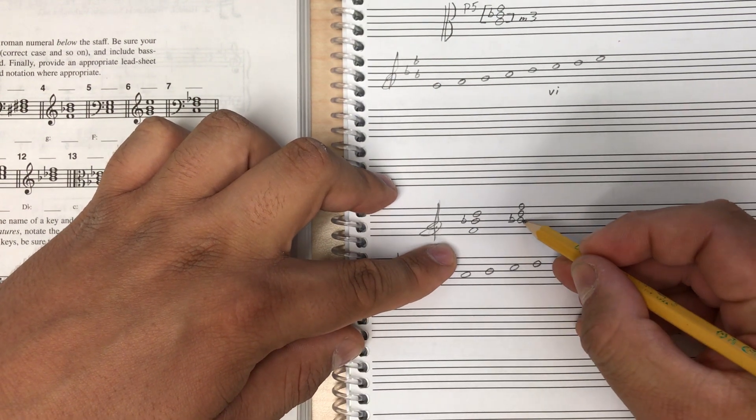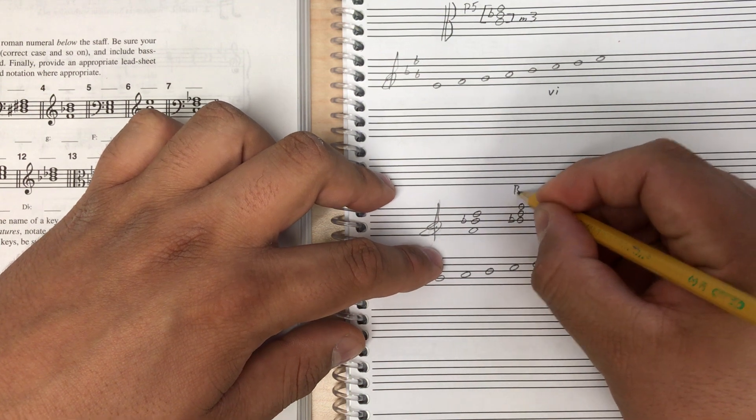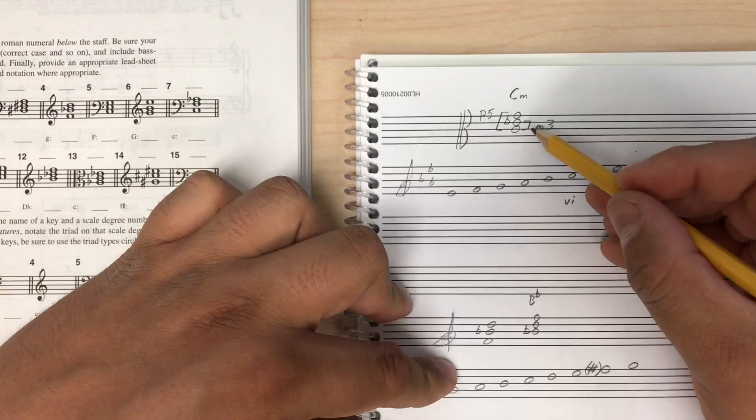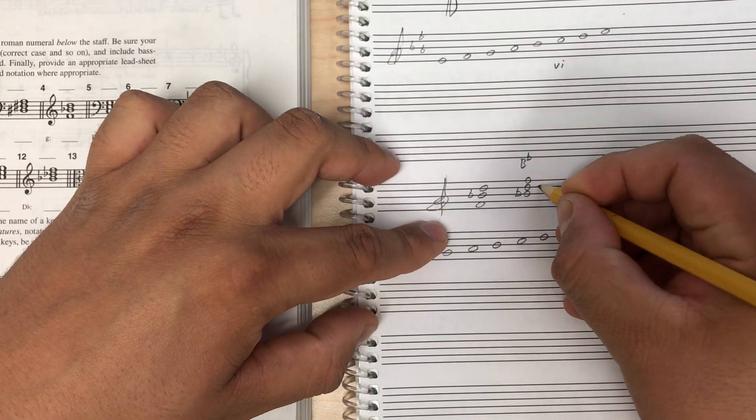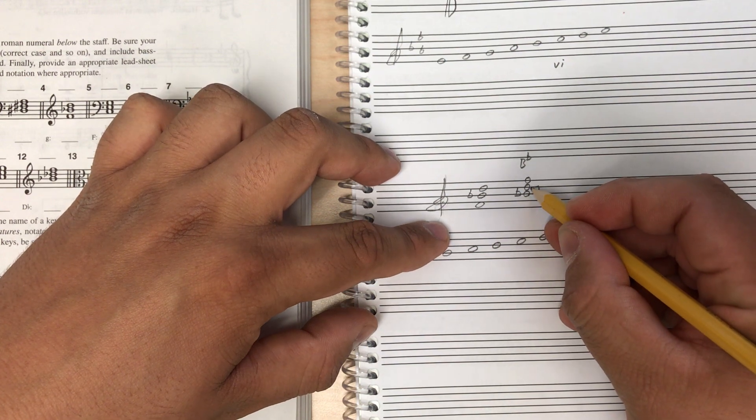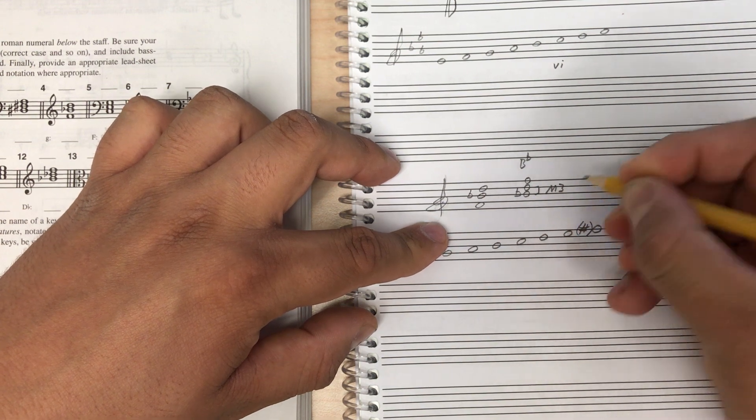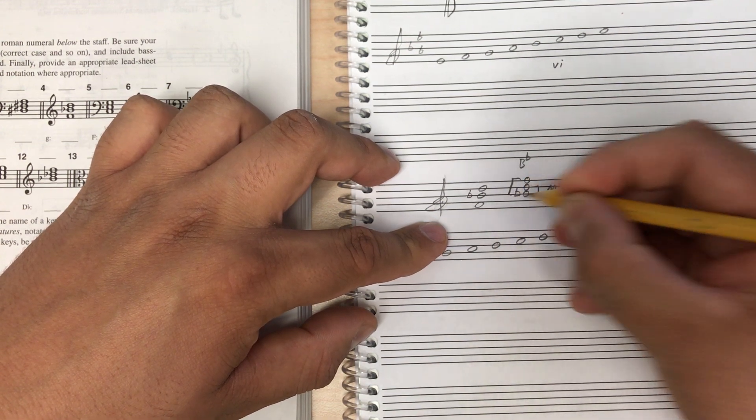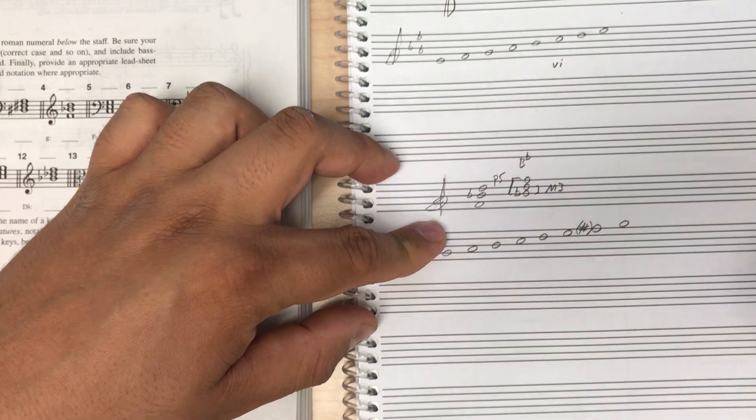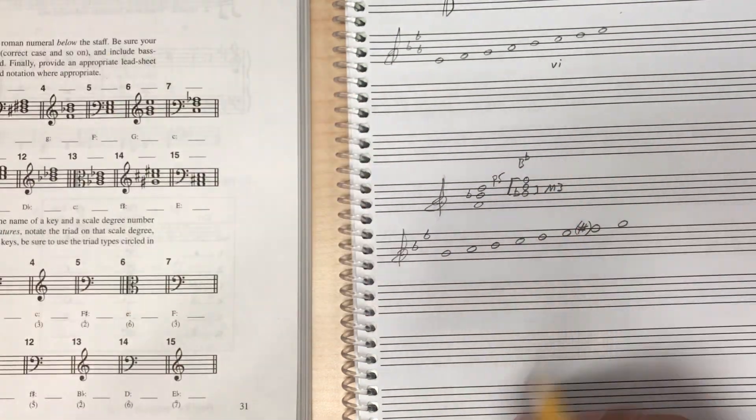So now that it's in root position, I can tell that this is a B flat chord of some kind, B flat. And then just like I did earlier with the C minor chord, I'm going to look at the interval structure. So B flat to D, it'll take you longer to figure this out than me, but I know that B flat to D is a major third. And B flat to F turns out to be a perfect fifth. So major third, perfect fifth. That means that this is a major triad.